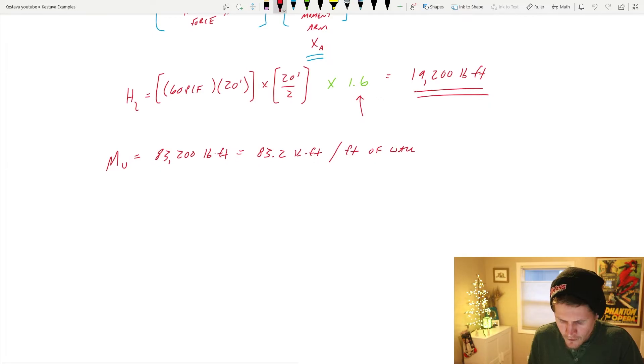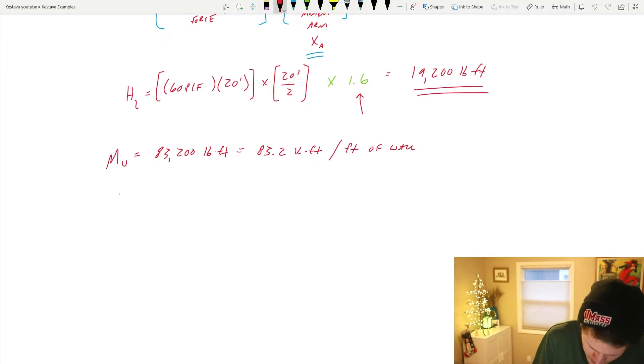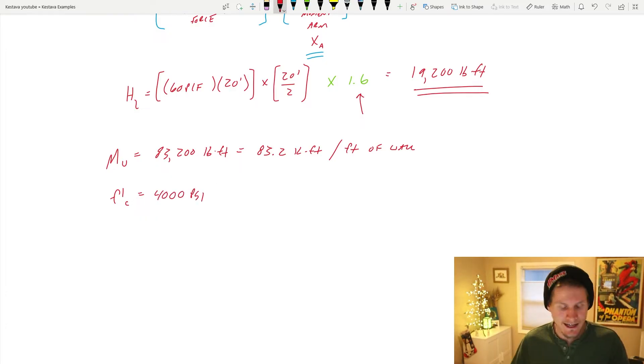Moving further here, I'm going to add some additional information. F prime C, the compressive strength of our concrete, I'm going to be using 4,000 PSI. Let's check the bending capacity of our stem.